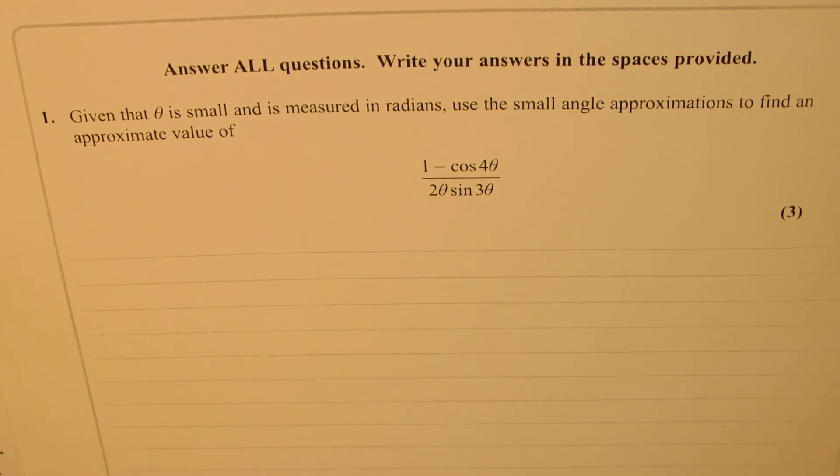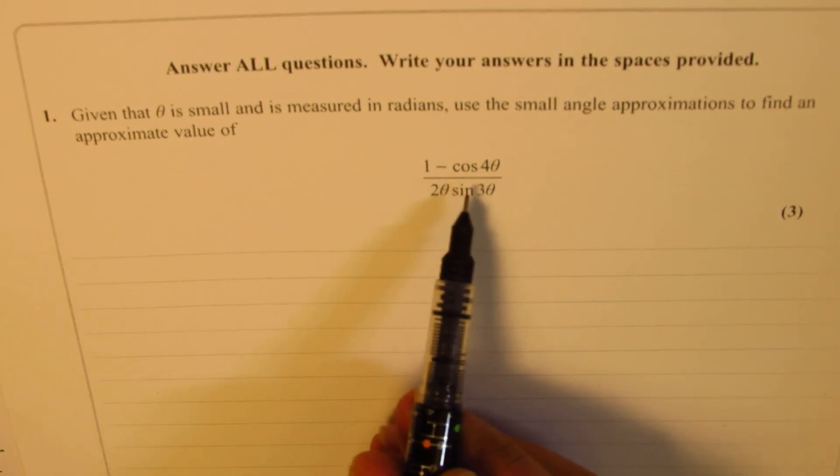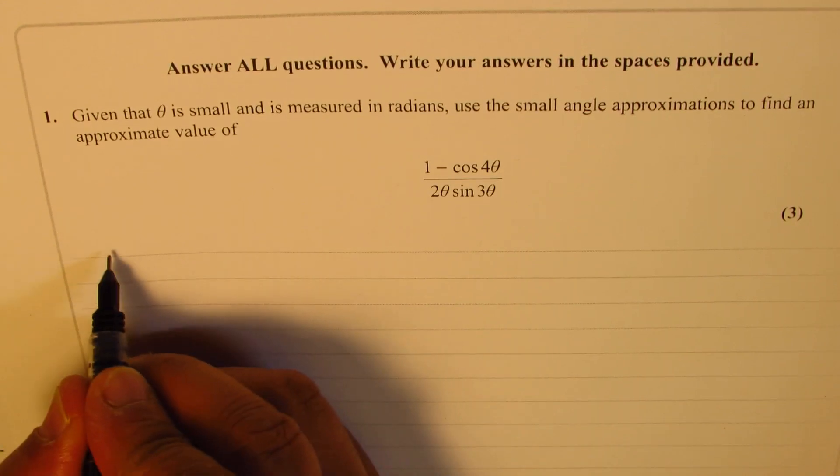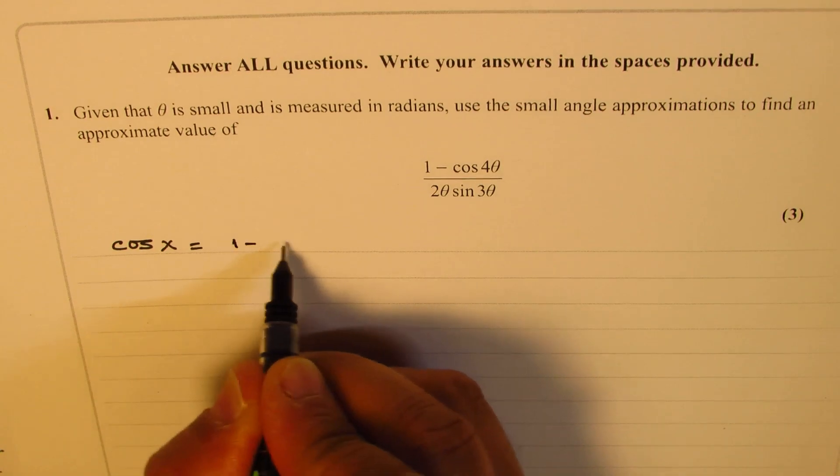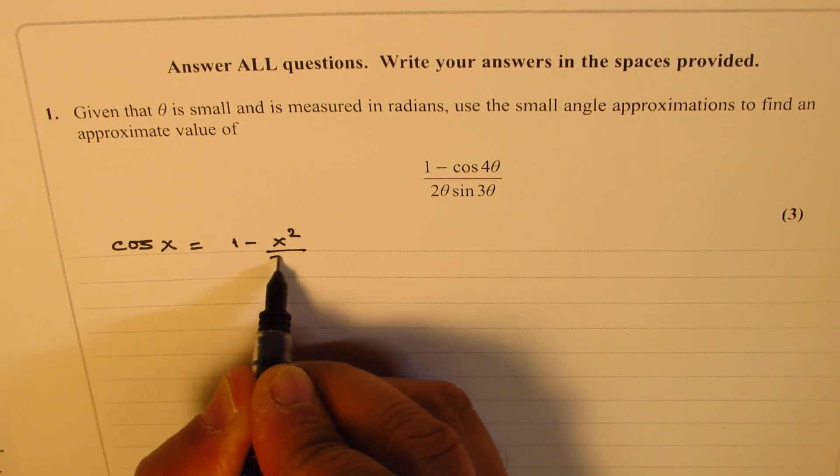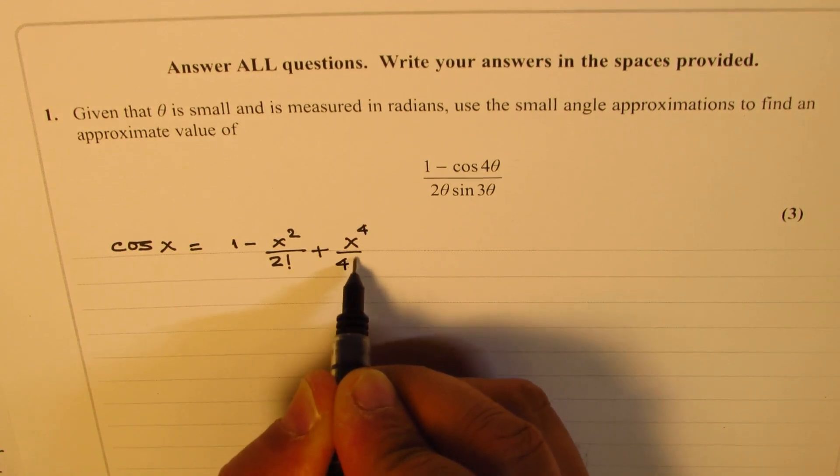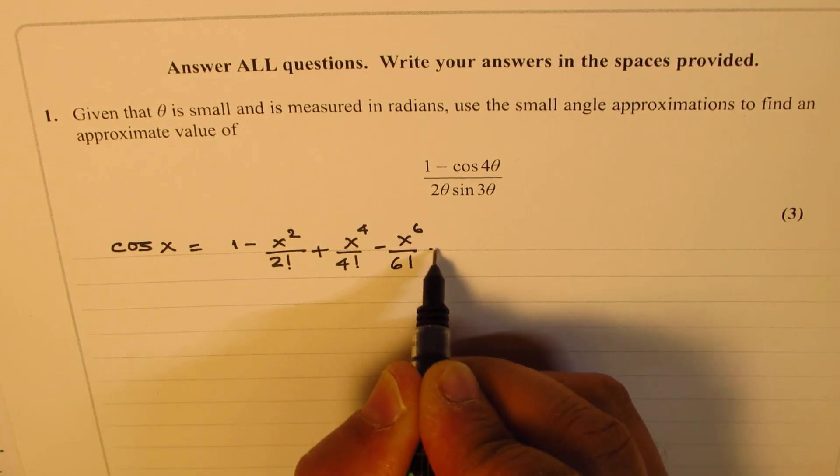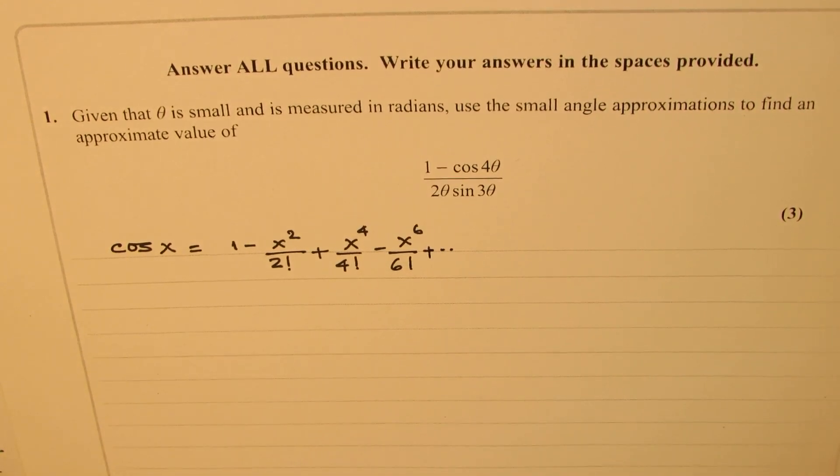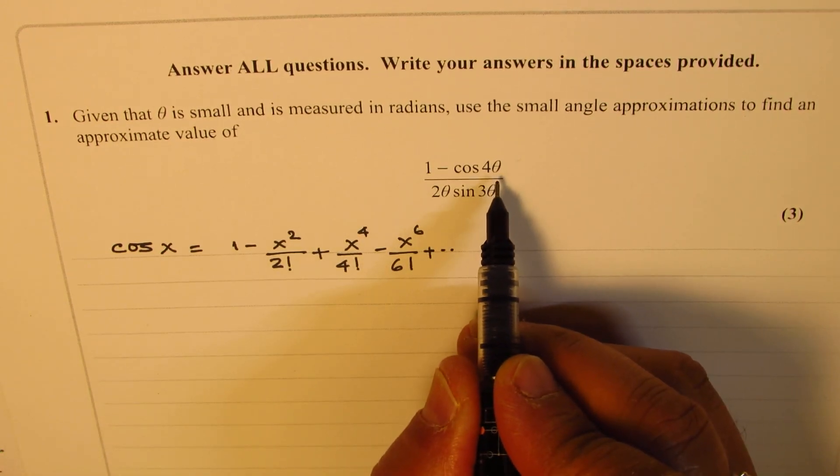Now, to give you an idea, what we should do here is to look into the series of cos theta. So let me write down that cos x in general can be written as 1 minus x squared over 2 factorial plus x to the power of 4 over 4 factorial minus x to the power of 6 over 6 factorial and so on. Now, as the condition is given to us, theta is very small.